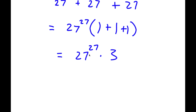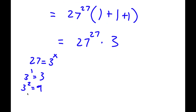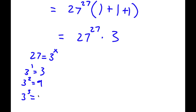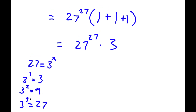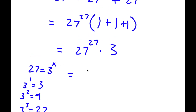Now if we want to multiply these two, we want them to have the same base. So 3 can't be simplified further, so the only thing left to simplify is 27. Now 27 equals 3 to the power of what? Well, 3 to the power of 1 is 3, 3 squared is 9, and 3 to the power of 3 is 27. So 27 equals 3^3. Then I would have 3 to the power of 3 to the power of 27 times 3 to the power of 1.